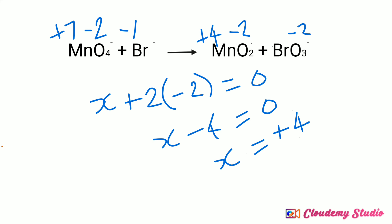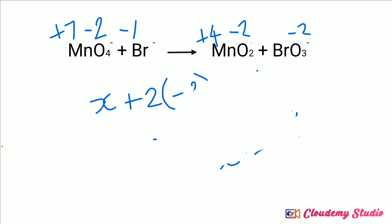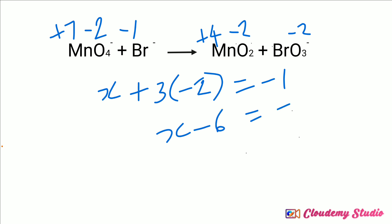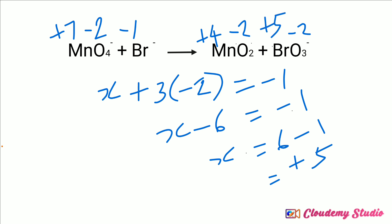Next, we calculate the oxidation number of bromine in bromate ion. Assuming bromine's oxidation number as x, with three oxygen atoms (3 × −2) and the ion charge of minus one: x − 6 = −1, therefore x = +5. The oxidation number of bromine in bromate ion is +5.